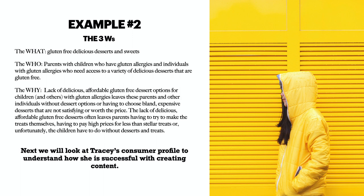Now let's look at the three W's for example number two. The what: gluten-free delicious desserts and sweets. The who: parents with children who have gluten allergies and other individuals with gluten allergies who need access to a variety of delicious gluten-free desserts. Notice I said parents with children, not necessarily the children themselves — because the children don't have the money to purchase the treats. You want to target the parents who have the money, are making the decisions, and are buying.